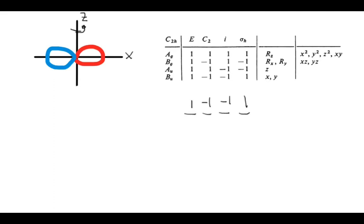This combination — 1, negative 1, negative 1, 1 — with respect to these operations is one of the irreducible representations. Look here: 1, negative 1, negative 1, 1. That means that in the C2h point group, the px orbital has Bu symmetry. In other words, the irreducible representation Bu describes or encapsulates or names the symmetry properties of the px orbital in this group.